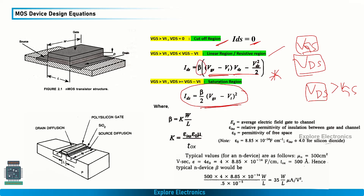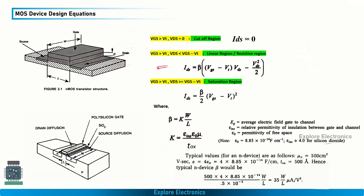There is a parameter called beta, which equals K × (W / L), where W is the width and L is the length of the channel. The constant K equals (epsilon_INS × epsilon_0 × mu) / TOX, where epsilon_INS is the relative permittivity of the insulator between gate and channel, epsilon_0 is the permittivity of free space, mu is the electron mobility in the N-channel, and TOX is the thickness of the oxide layer. Taking all these into account gives us the expressions for both the linear and saturation regions.